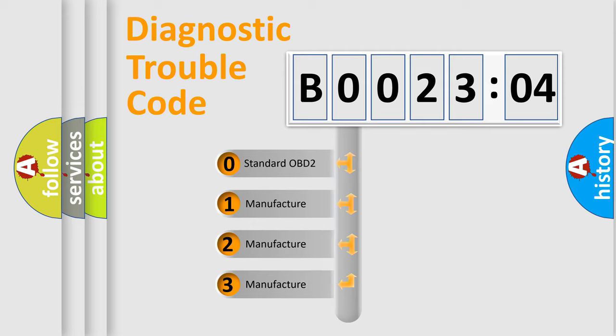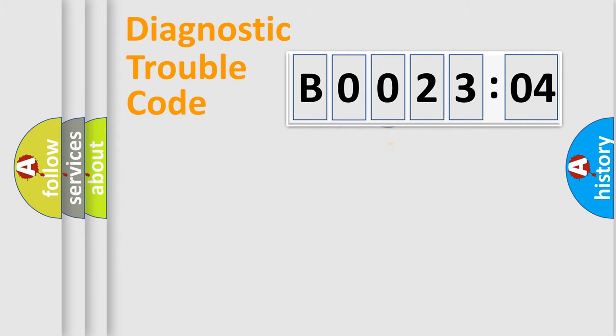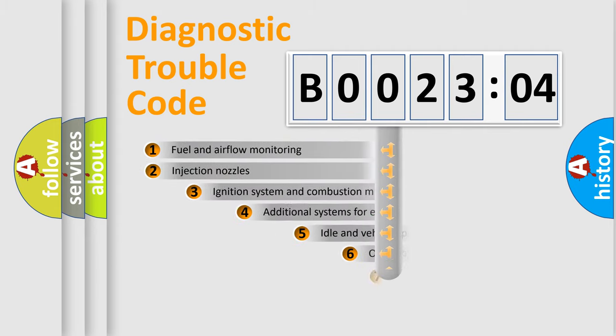If the second character is expressed as zero, it is a standardized error. In the case of numbers 1, 2, or 3, it is a more prestigious expression of the car-specific error.